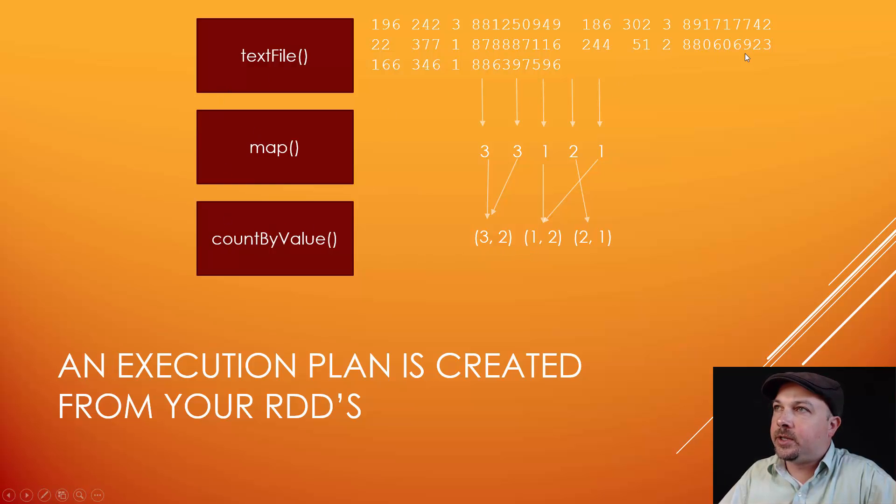You can see here a representation of how that gets manifested. In this example, we have five different lines of ratings data and these get piped down where they are mapped to just extract the actual ratings themselves. And finally, we add them all up together.